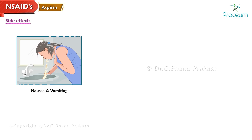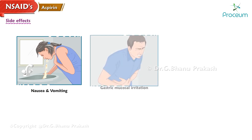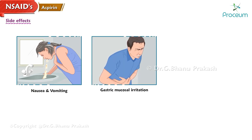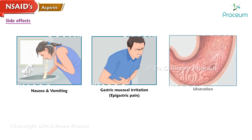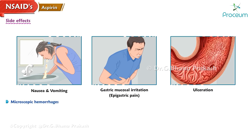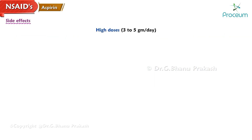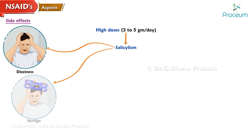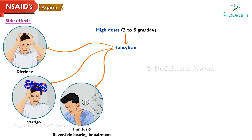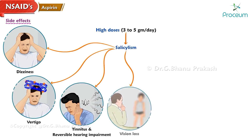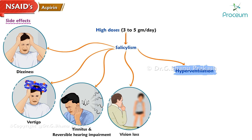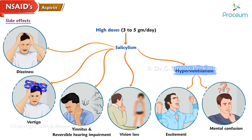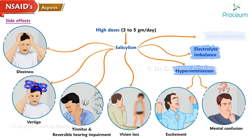Side effects: The most common side effects caused by aspirin are nausea, vomiting, gastric mucosal irritation and damage leading to epigastric pain, ulceration, and microscopic hemorrhages. At high doses of 3 to 5 grams per day, it can cause salicylism, which may produce dizziness, vertigo, tinnitus, reversible hearing impairment, vision loss, and hyperventilation leading to excitement and mental confusion and electrolyte imbalance.